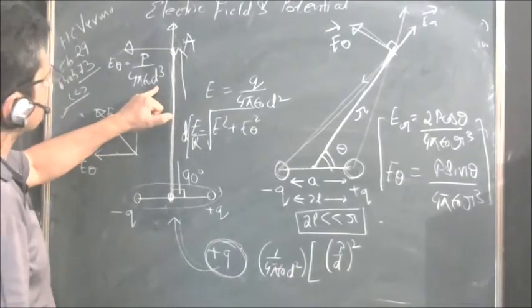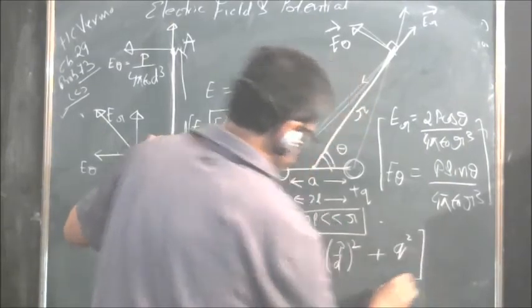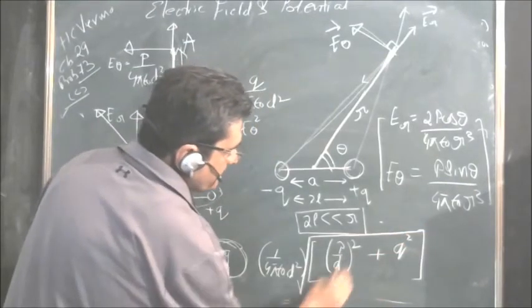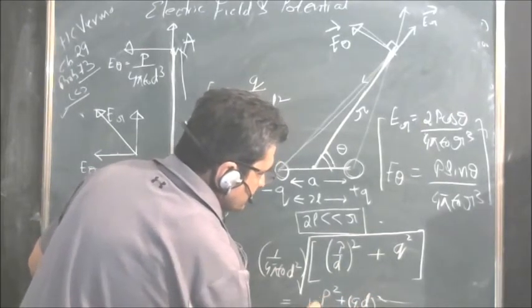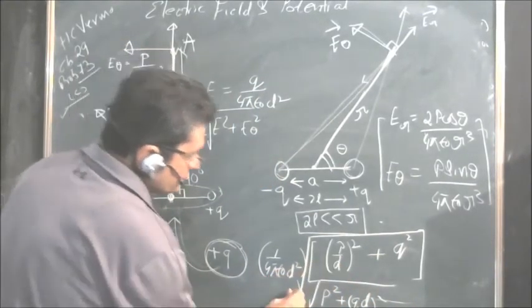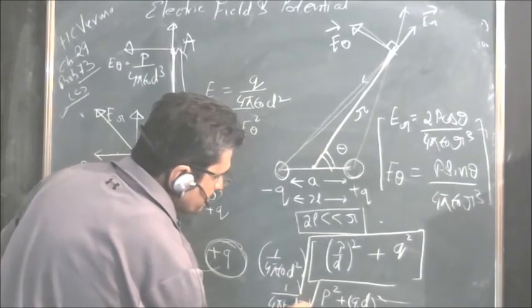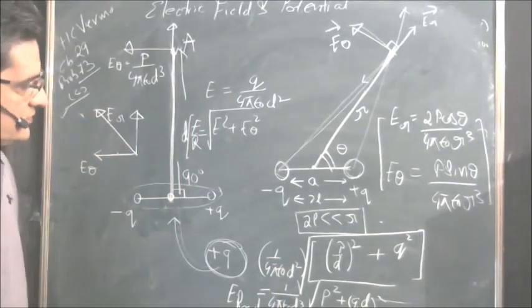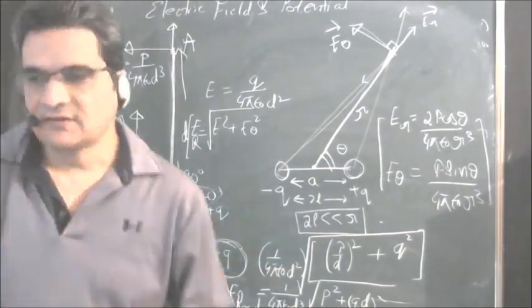P/D whole squared plus Q² – this D² we have taken out, so it becomes (P² + Q²D²)^(1/2) / D². When we do square root, D will come out, so it will be 1/(4π ε₀ D³) times √(P² + Q²D²). This is the resultant electric field in this case. In such problems, just use the superimposition method and one should be able to solve.